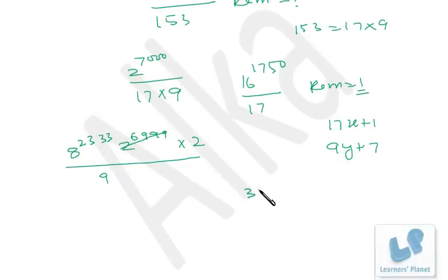Suppose I put x as 2, then 17 into 2 is 34. If I put x as 3, so 17 into 3 is 51 plus 1, which is 52. Is 52 in 9y plus 7 format?